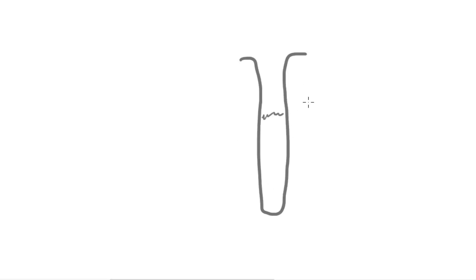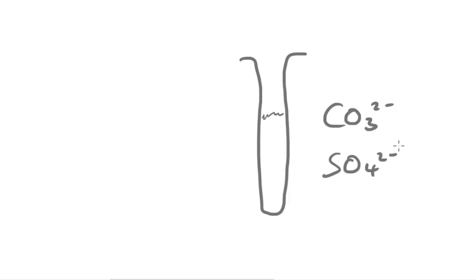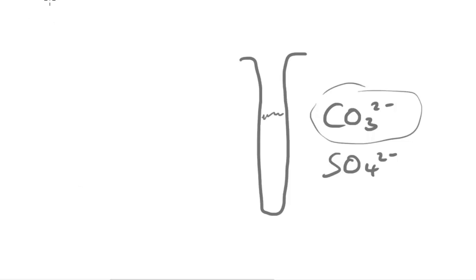When doing the silver nitrate test, let's say we have a solution and we know there's a halide in there, but there's a possibility that there might be other ions present — maybe carbonate ions CO3 2-, maybe sulfate ions SO4 2-. If you had these kinds of ions in the solution, they can really mess up your results and give you a false positive, because they would react with the silver nitrate.